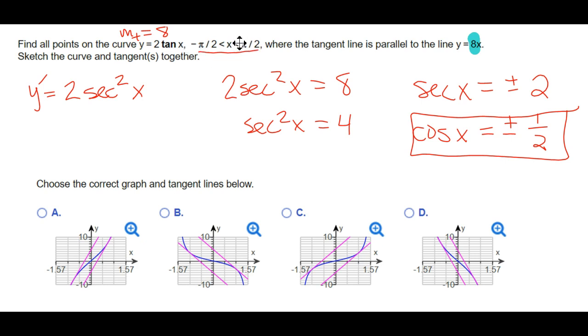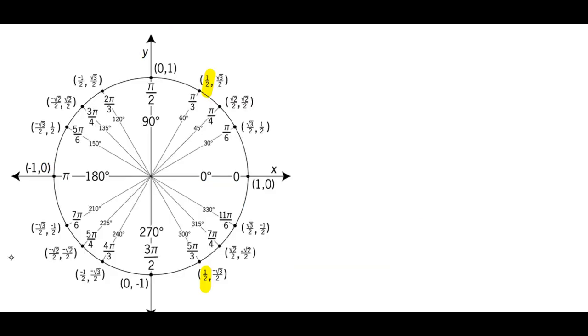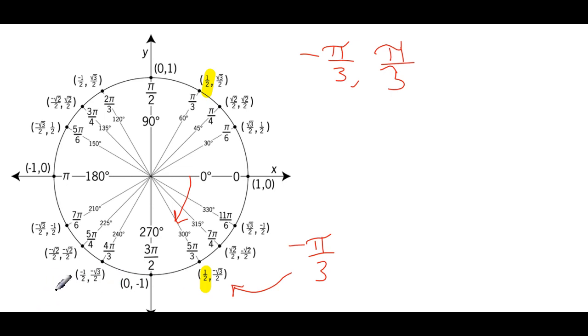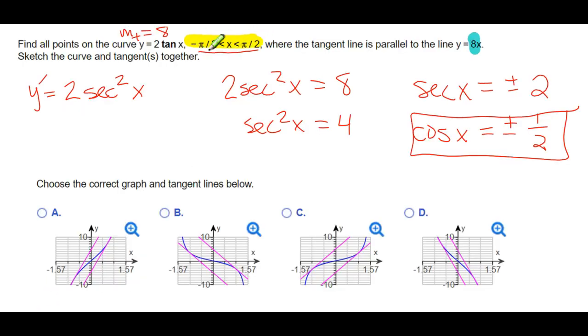Our interval is negative π/2 to positive π/2. So how am I going to get that number? Remember 5π/3 is all the way around. I can also come down this way, which would be negative π/3, and I would get to that number as well. So at negative π/3 and positive π/3, we are at places where the cosine is equal to 1/2 and −1/2. Those are the two solutions in this interval.